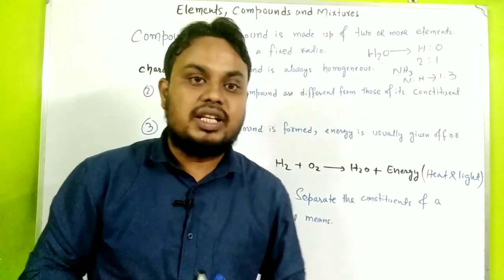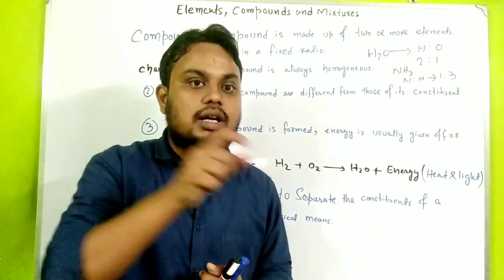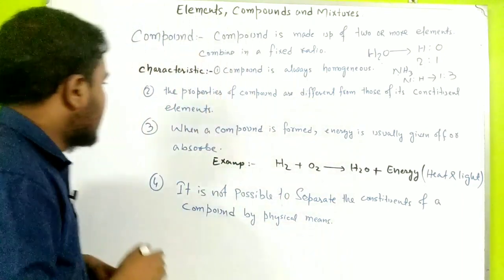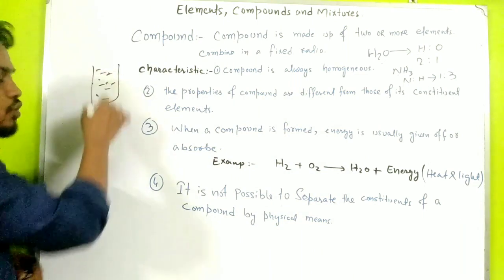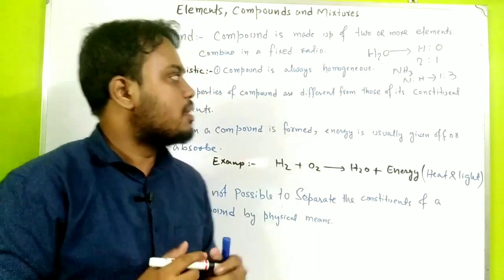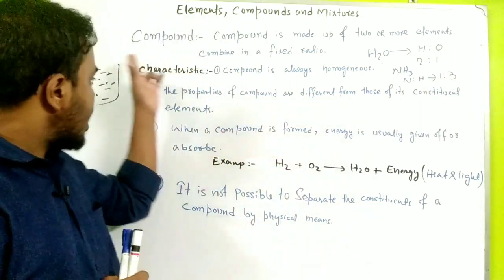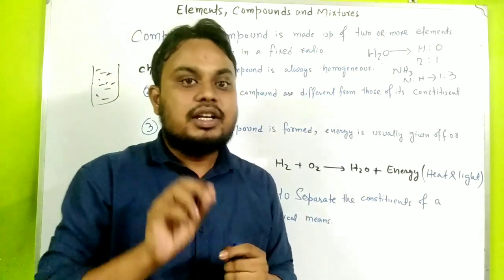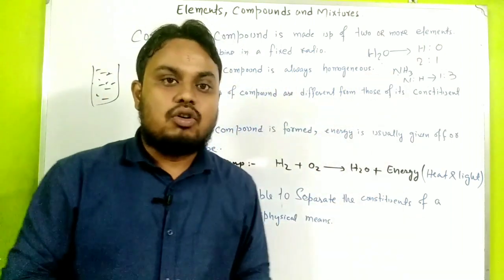The first characteristic of a compound is that it is always homogeneous. Homogeneous means that throughout the compound, the composition of matter is the same — it is uniformly distributed in a fixed ratio.